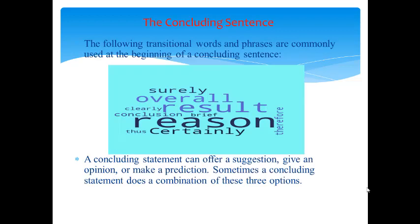Here in this slide you see the words which are usually used for these important purposes. Transitional words in concluding sentences are commonly used at the beginning: surely, as a result, overall, for this reason, certainly, because of this, in conclusion, at the end, therefore, for these reasons, clearly, thus, in brief. A concluding sentence can offer suggestions, give an opinion, or make a prediction. Sometimes a concluding sentence does a combination of these three options.